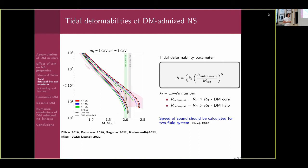The tidal deformability depends on the total mass — which in the case of dark matter admixed compact stars is the sum of baryonic and dark matter components — and also on the radius. In the case of a dark matter core, the outermost radius equals the radius of the baryonic component. In the case of a halo, the outermost radius equals the radius of the dark matter, which could be much bigger — 30 to 100 kilometers or more — completely different from the baryonic component radius of about 11 kilometers.